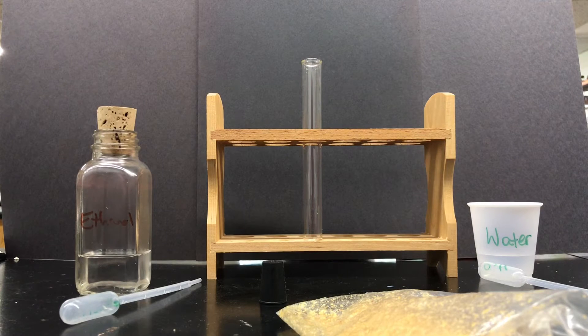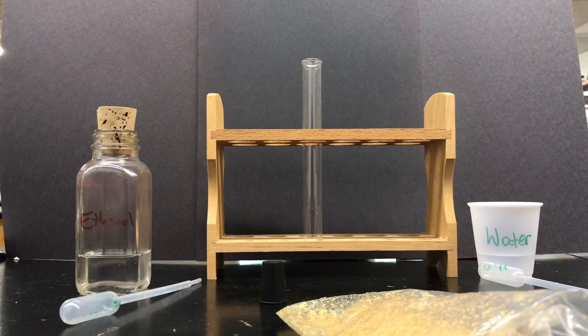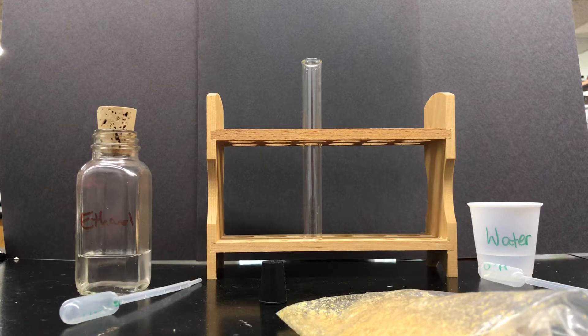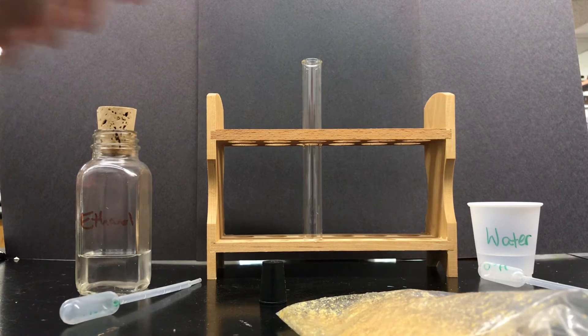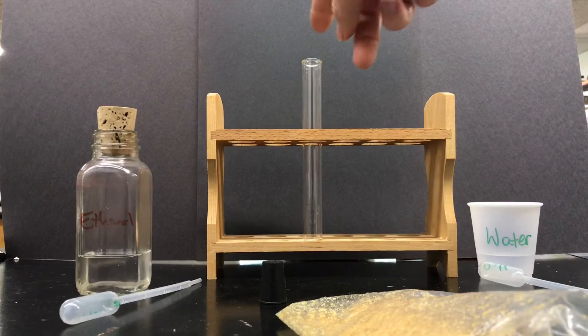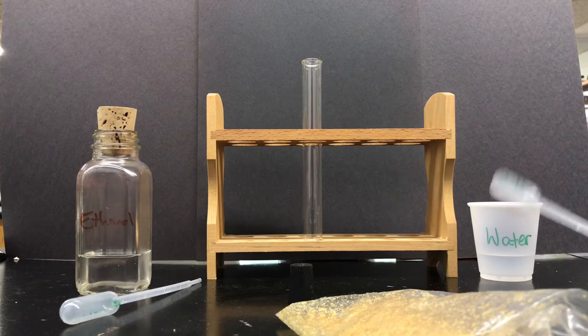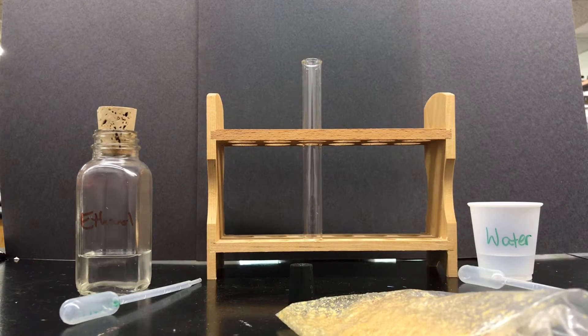To test a sample to see if it has lipids we perform something called the emulsion test. For that we are going to need ethanol, test tube, a rubber stopper, water, and a pipette designated for the water and a pipette designated for the ethanol and a sample.